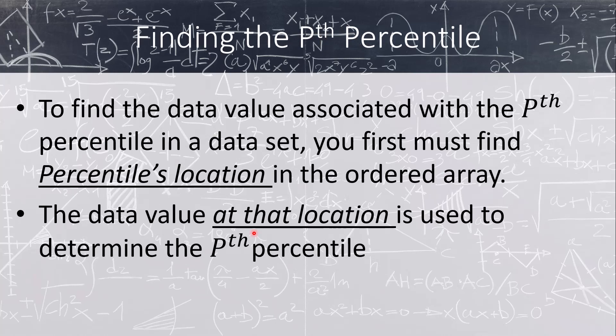So how do we actually find the percentile for a certain data set? The first thing you need to do is find the percentile's location in an ordered array. The p-th percentile maps to a particular location in the data set, and the value at that location is what we use to determine the p-th percentile — sometimes it will be the average of two locations. One thing to mention is that percentiles do not make much sense for small data sets; the larger the data set, the more meaningful they are. Typically your data set should have at least 100 members. We will be using the populations of the 50 states as our example.